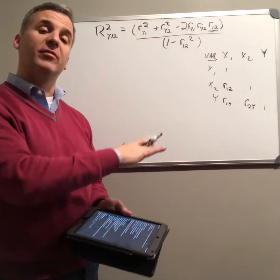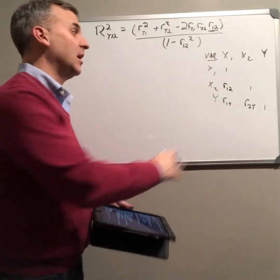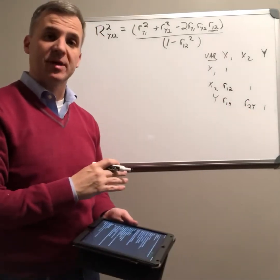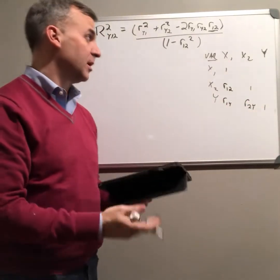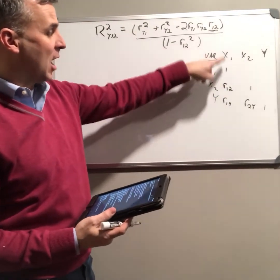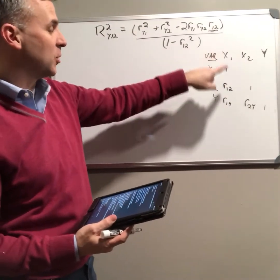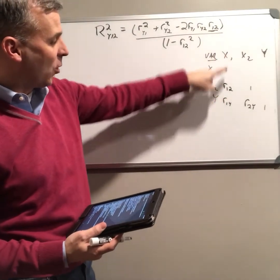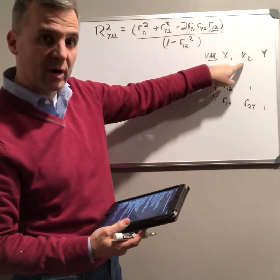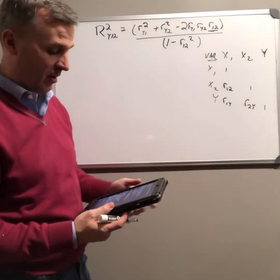Now let's look at the case where all of our variables are related to each other, that nothing on this correlation matrix goes to zero. So there's a relationship between our two independent variables and there's a relationship between our independent variable one and our outcome variable and our independent variable two and our outcome variable.